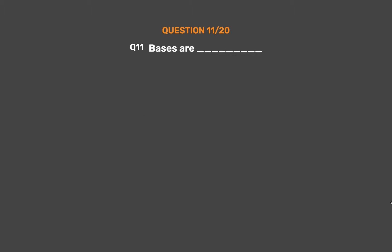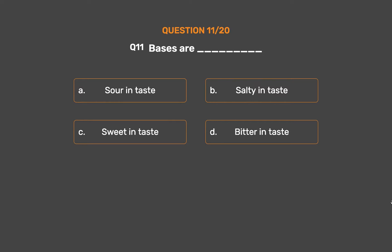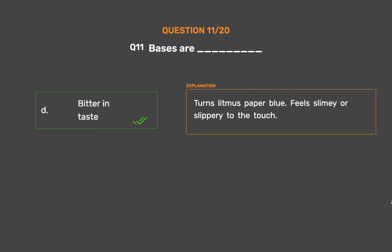Question number 11. Bases are — Option A: Sour in taste. Option B: Salty in taste. Option C: Sweet in taste. Option D: Bitter in taste. The correct answer is Option D: Bitter in taste. Bases turn litmus paper blue and feel slimy or slippery to the touch.